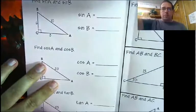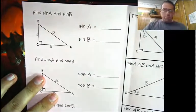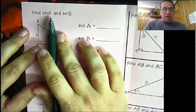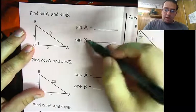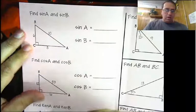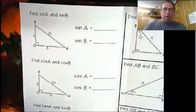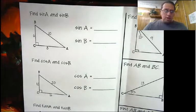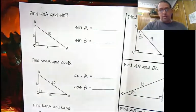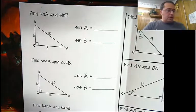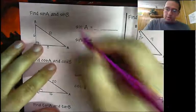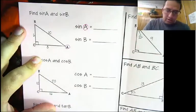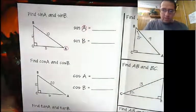Now we're going to do a couple of examples. We are going to find the sine of angle A and the sine of angle B. Notice the angle is always going to be listed — you can't just say 'find the sine,' just like you can't say 'find the square root' without specifying of what. You have to say find the sine of angle A, find the sine of angle B — which one are we looking for?